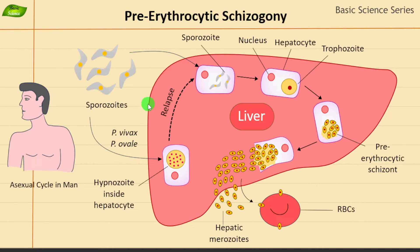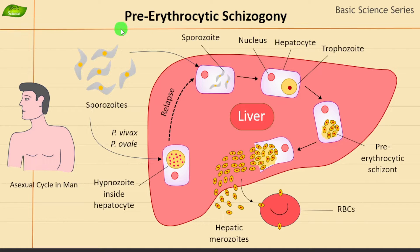Hello everyone. In this video we will be understanding the life cycle of an important parasite, which is Plasmodium. I will only cover the pre-erythrocytic schizogony, which is one of the initial steps involving the liver cells. We'll understand the fundamental concepts especially focusing on pre-erythrocytic schizogony, and I will explain everything step by step.